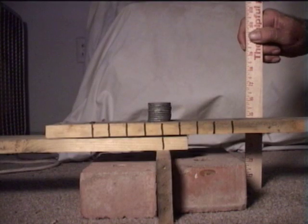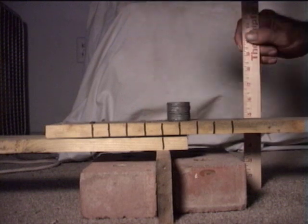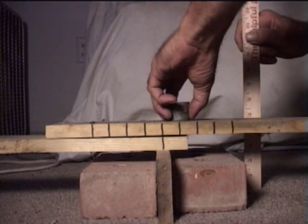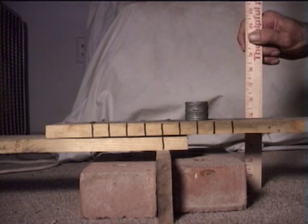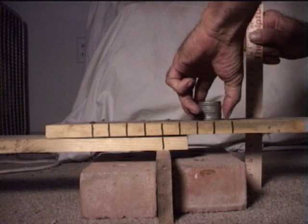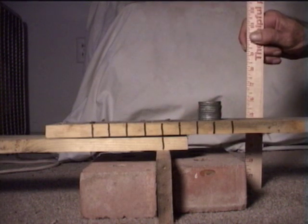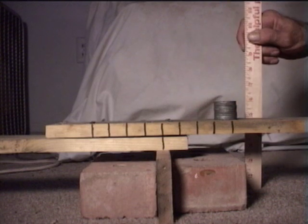The stack of washers now weighed eight ounces total. I moved the eight ounces four inches and the arm remained level or balanced. This means eight ounces can move back and forth a total of eight inches and the arm will remain level or balanced.